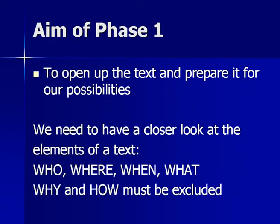In phase one we are opening up the text and preparing it for multiple possibilities. We need a closer look at the elements of the text: who do we find in the text, where can we find them, when is it happening, and what is happening — including what objects are in use. The why and the how must be excluded, because that is the actor's work — their motivation behind the action must be left to the rehearsal process. Very important: otherwise you take from the actors what is their main work.